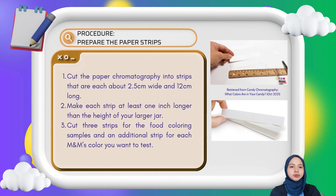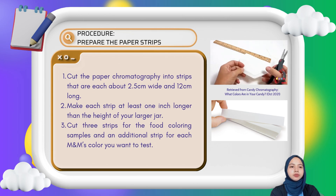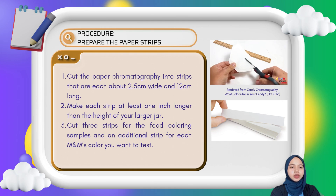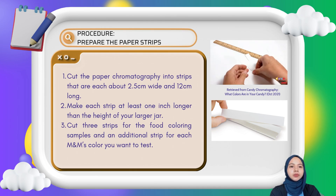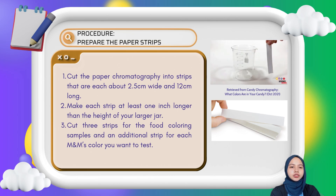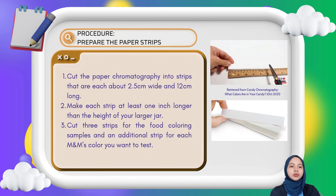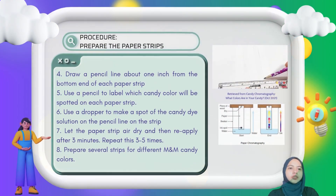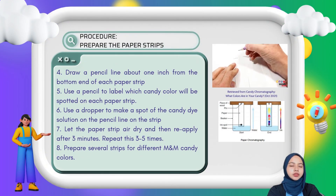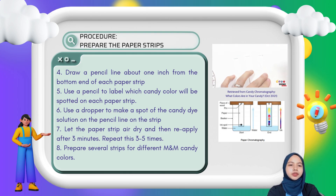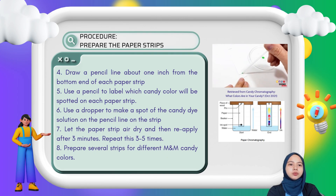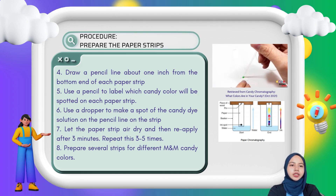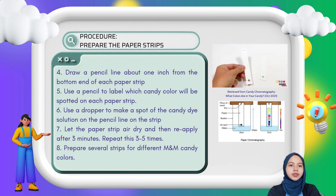For preparing the paper strips, cut the chromatography paper into strips about 2.5 cm wide and 12 cm long — at least 1 inch longer than the height of your larger jar. Cut 3 strips for the food coloring samples and additional strips for each M&M color you want to test. Draw a pencil line about 1 inch from the bottom of each strip and label which candy color will be spotted on it. Use a dropper to make a spot of the candy dye solution on the pencil line, let it air dry, and reapply after 3 minutes. Repeat 3 to 5 times and prepare strips for each M&M candy color.